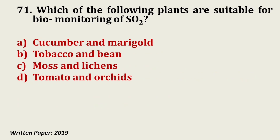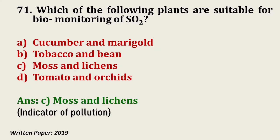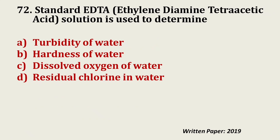Question number 71: Which of the following plants are suitable for bio-monitoring of sulfur dioxide — cucumber and marigold, tobacco and bean, moss and lichens, or tomato and orchid? The answer is moss and lichens, because these are indicator species of pollution. An increase of sulfur dioxide indicates pollution, which is observed by the loss or change in the phenology of moss and lichens.